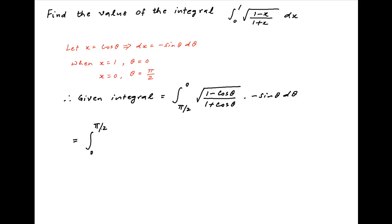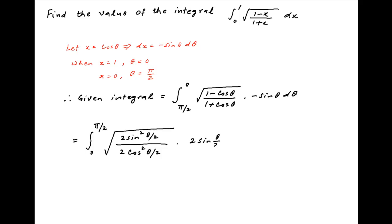Now, (1 - cos θ) can be replaced with 2 sin²(θ/2), and (1 + cos θ) can be replaced with 2 cos²(θ/2). Finally, sin θ can be replaced with 2 sin(θ/2) cos(θ/2). This simplifies to the integral from 0 to π/2 of 2 sin²(θ/2) dθ.